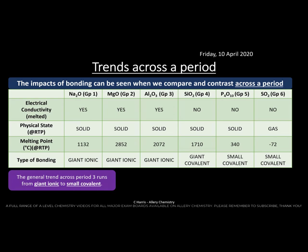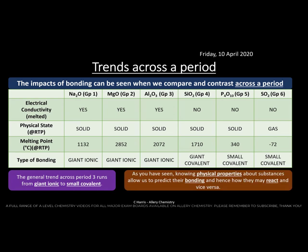The general trend across period 3 runs from giant ionic to small covalent. Knowing physical properties of substances allows us to predict the type of bonding and how they would behave and react. This is quite a powerful tool in a chemist's toolbox.